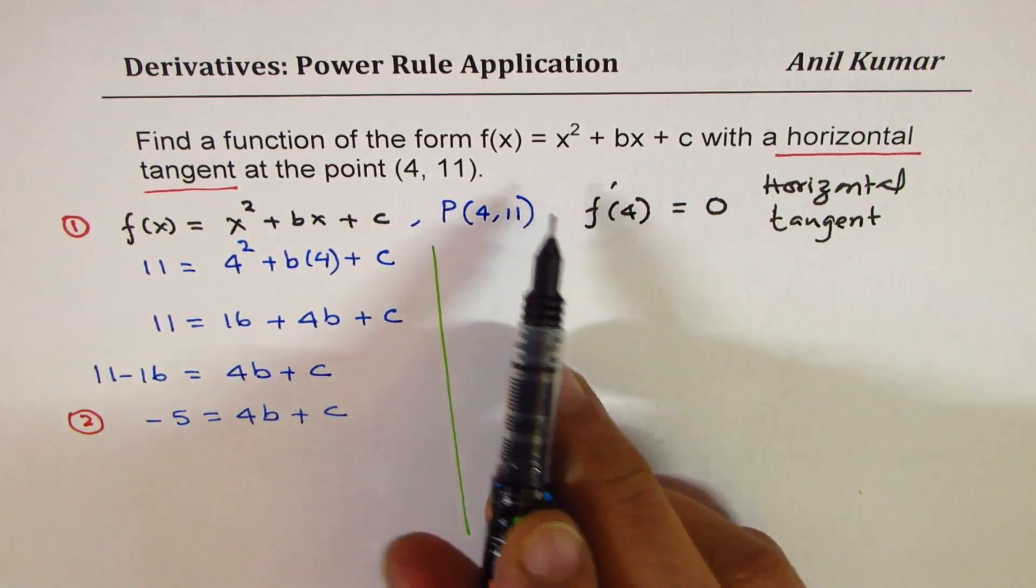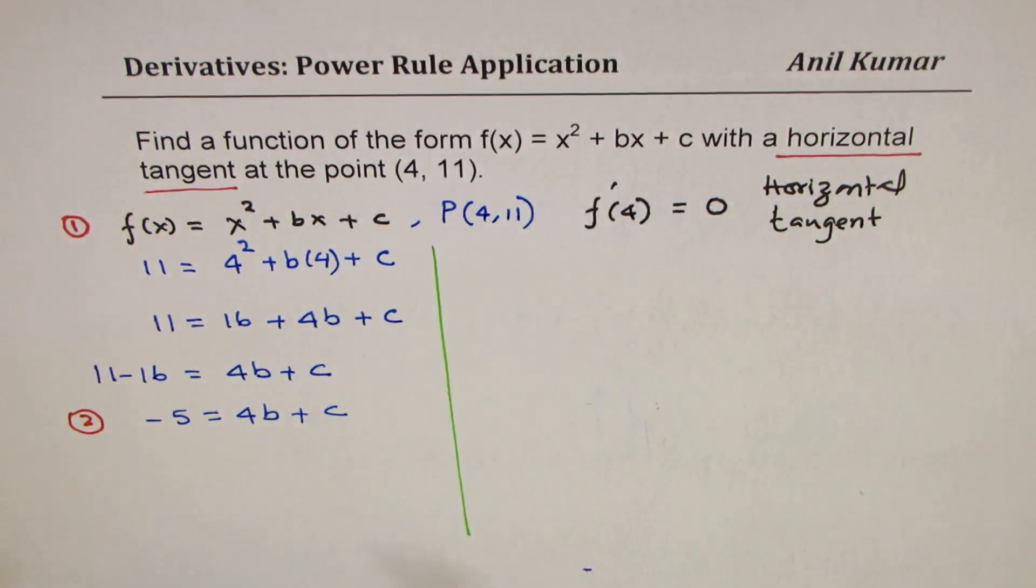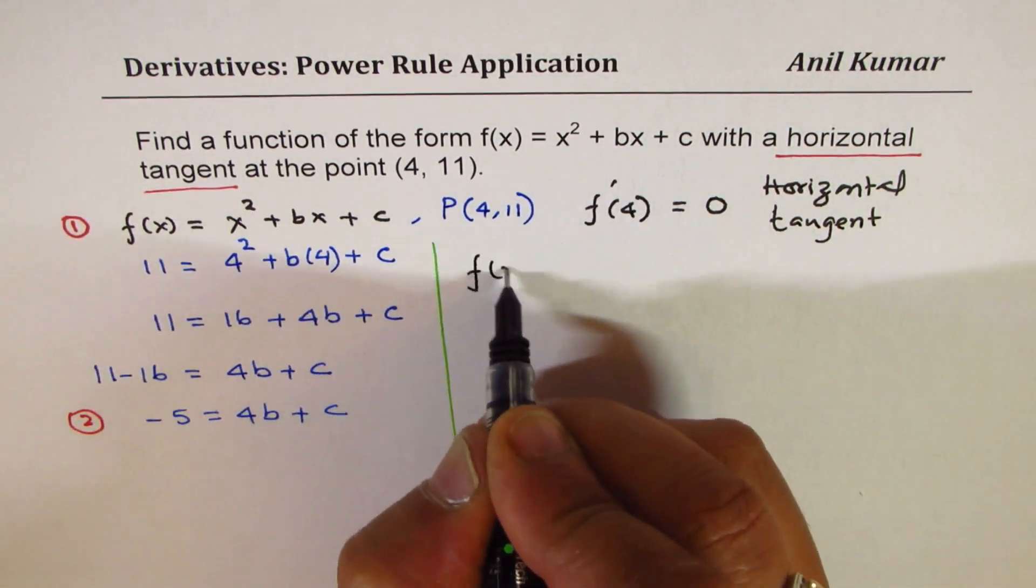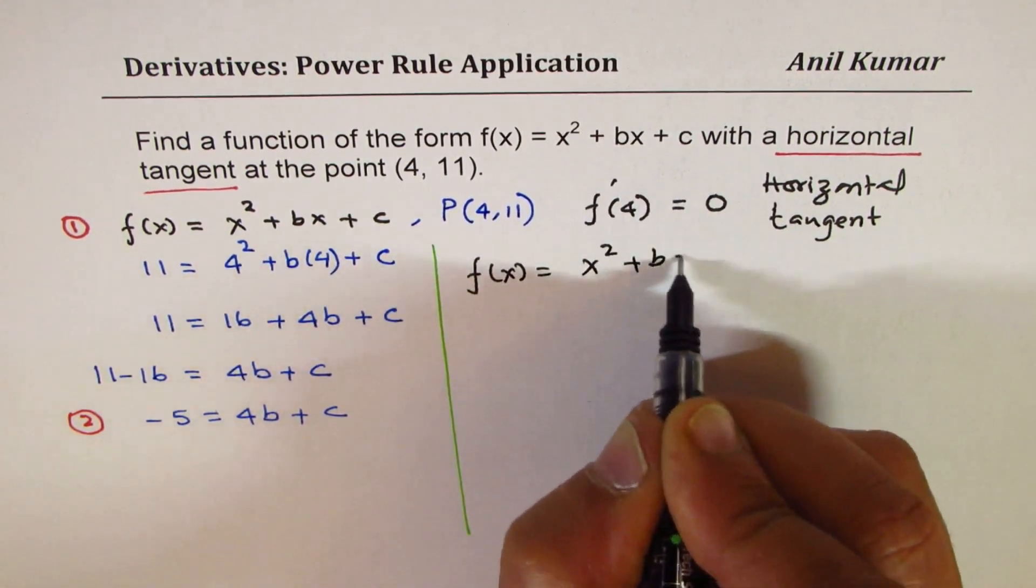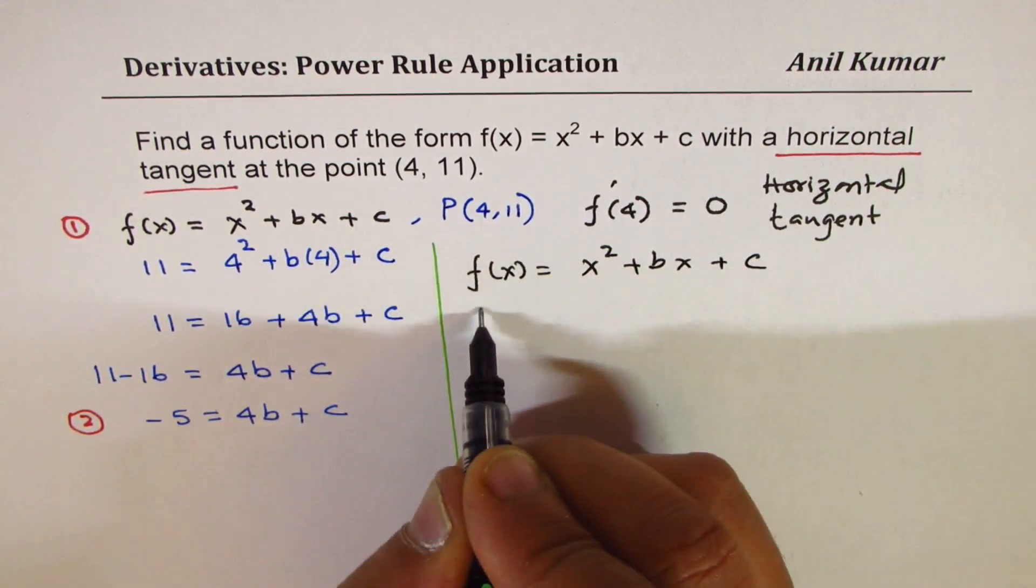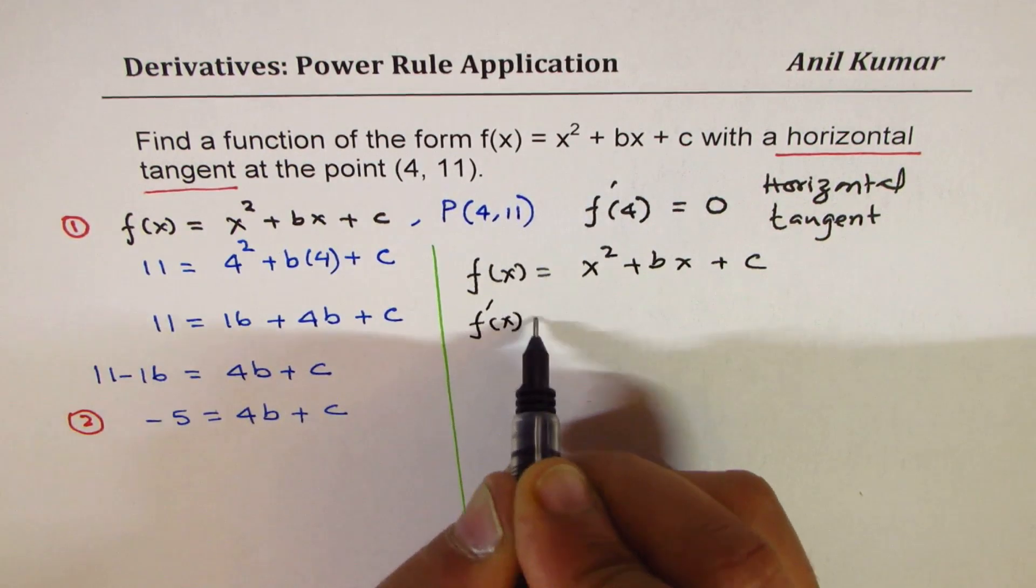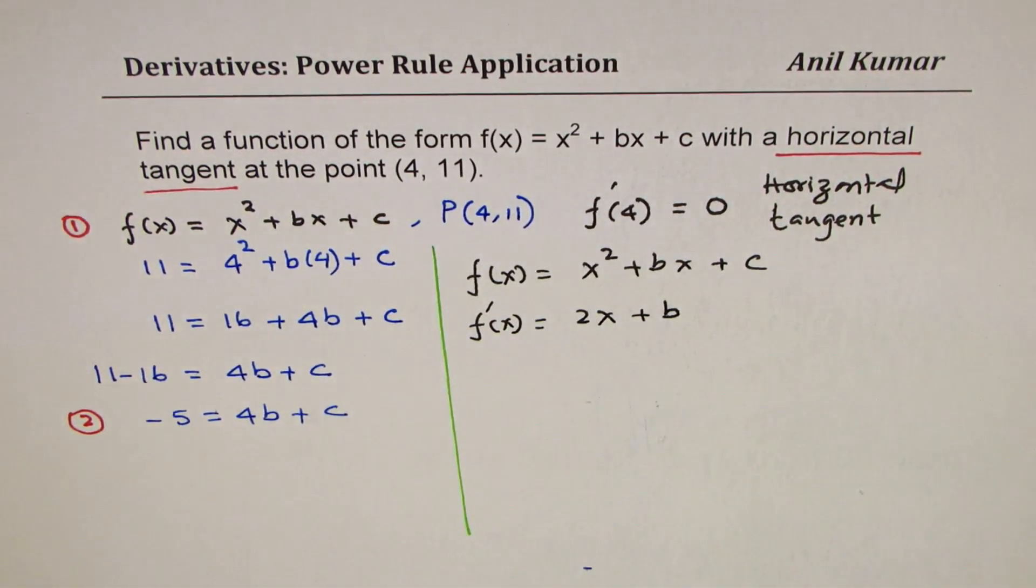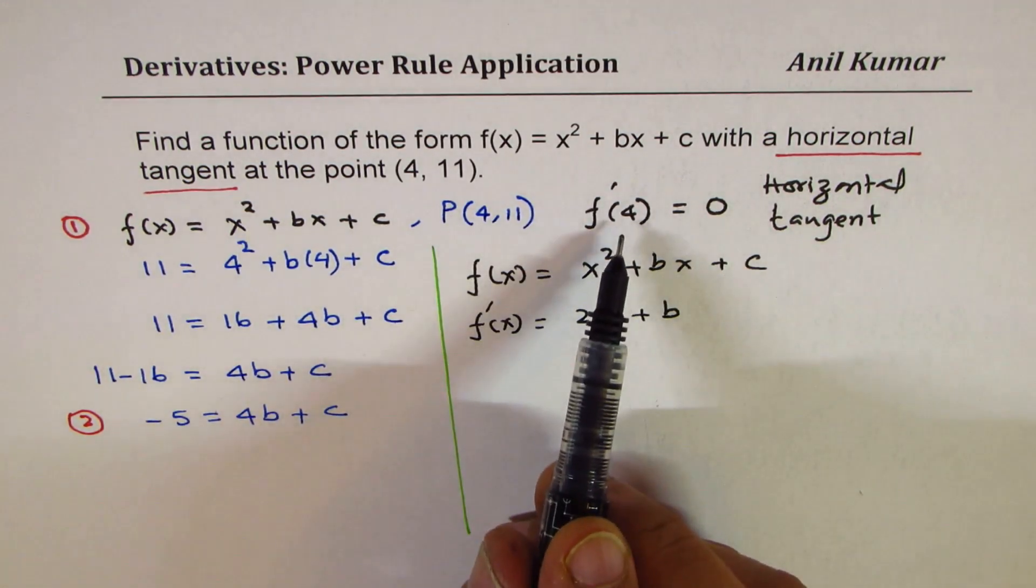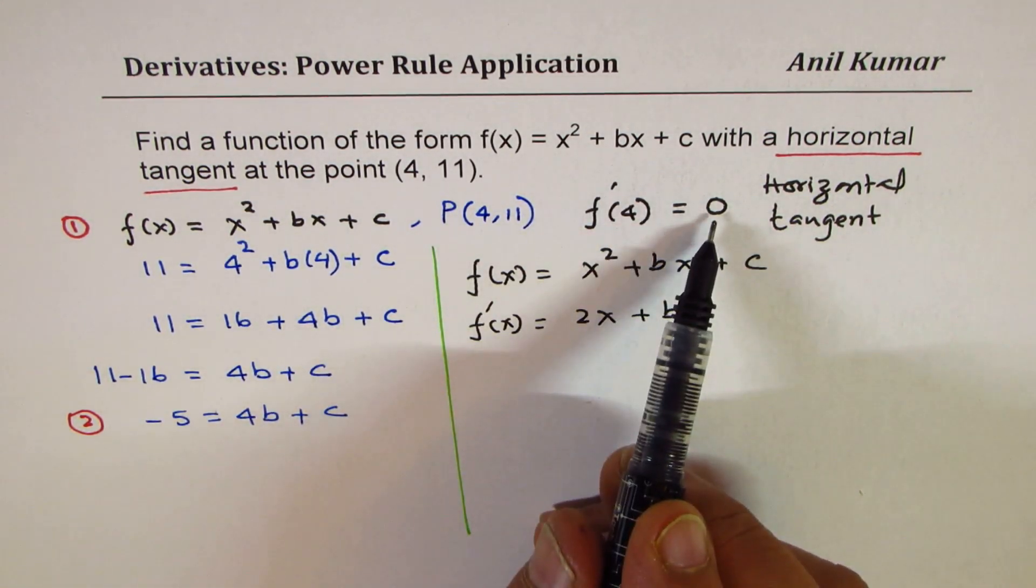So let's find derivative of the function using power rule. We are given the function f(x) = x² + bx + c. Derivative of this function f'(x) is 2x + b. Now, for x = 4, derivative is 0.